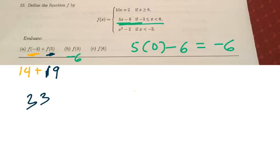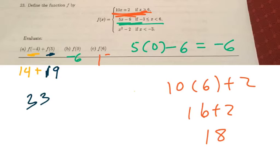Last one says, well, where is 6? Well, we know 6 is actually greater than or equal to. So be careful, because this one has 6, but it doesn't have a line under here to indicate that it's equal to 6. So let me erase that. We know it's got to be the top one. And so all I do is 10 times 6 plus 2, and this gives me 16 plus 2, which is 18. So the last one is 18.